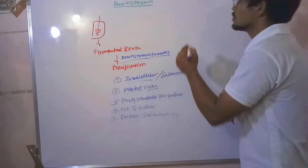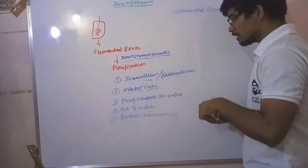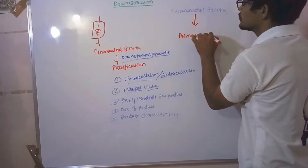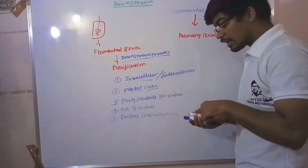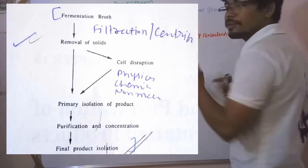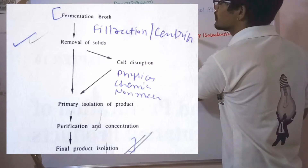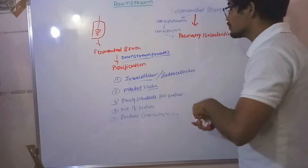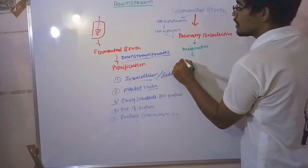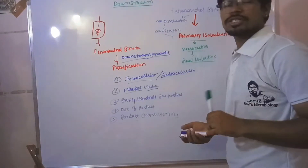Here is our fermented broth. After we have fermented broth, we go for isolation. Before that we are doing cell separation, and if our product is intracellular then cell disruption. Then primary isolation, after which we go for purification.